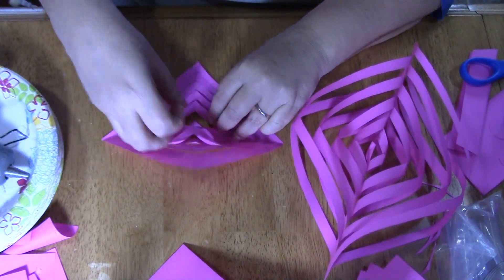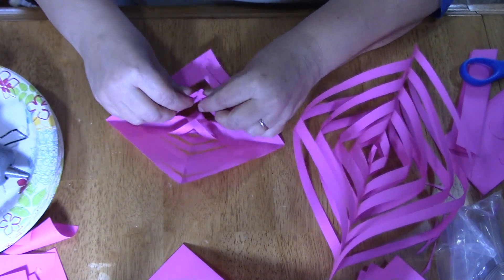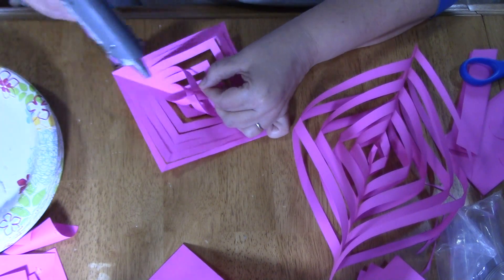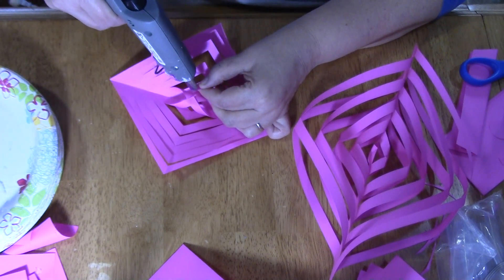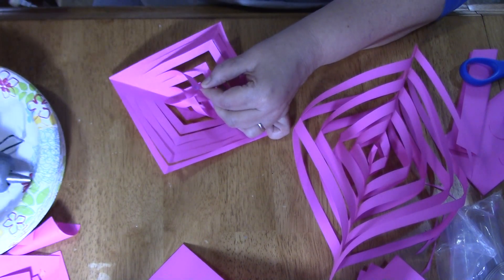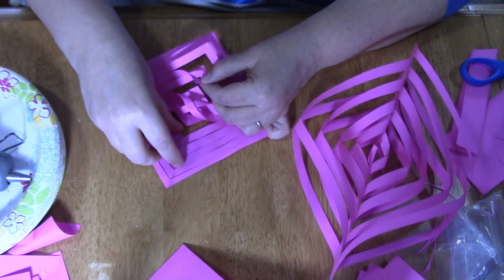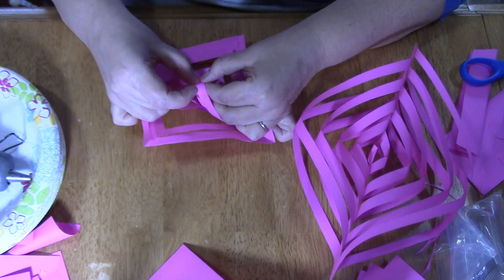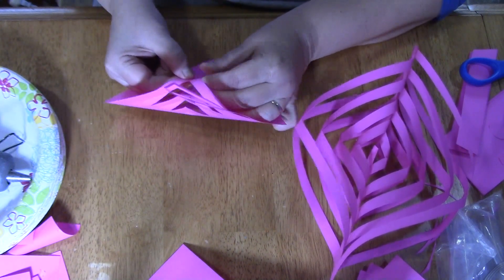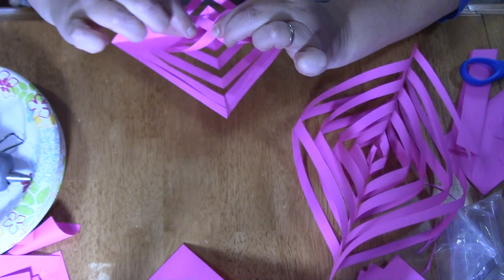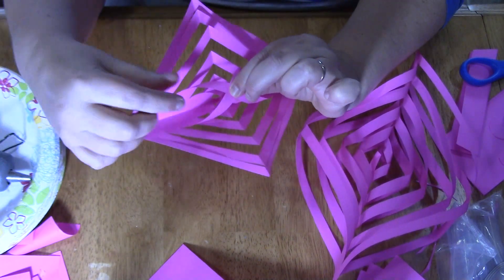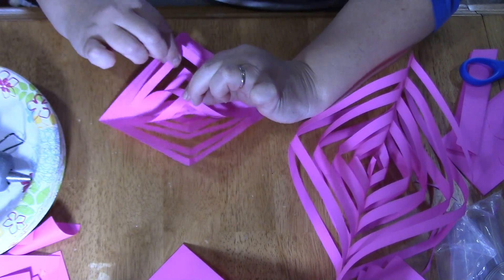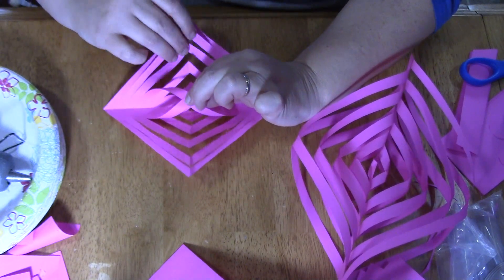Okay, and then again, skip the one right next to where we pulled and get the next one. Skip that one, grab this one. As you're getting out toward the edges, the circles are getting larger, so it's easier to work with. Okay, skip this one and pull this one forward.